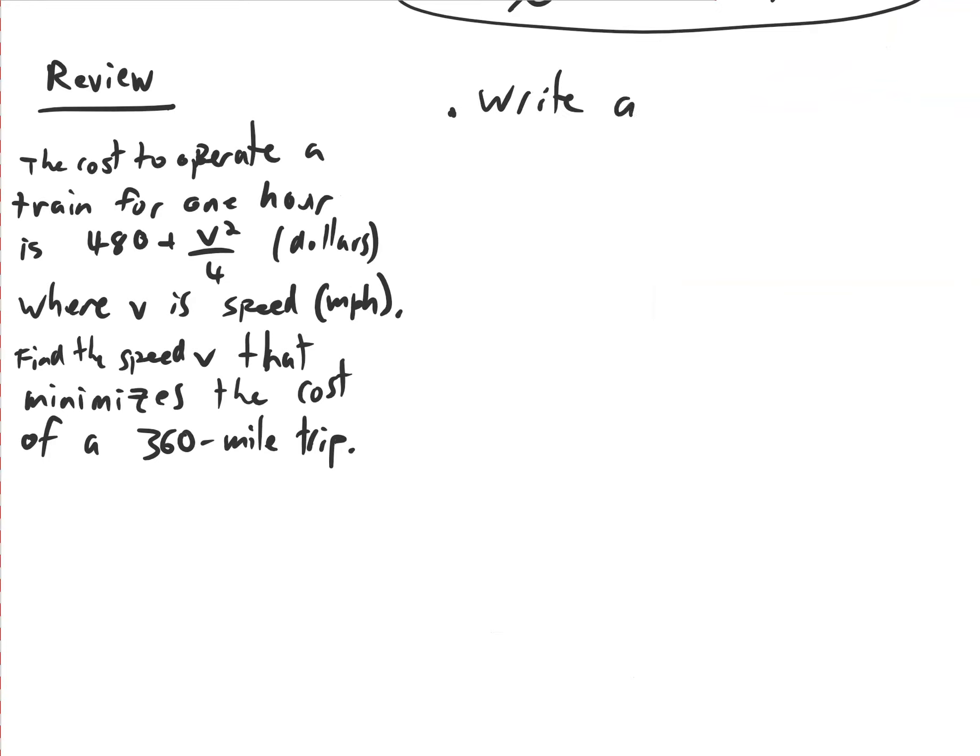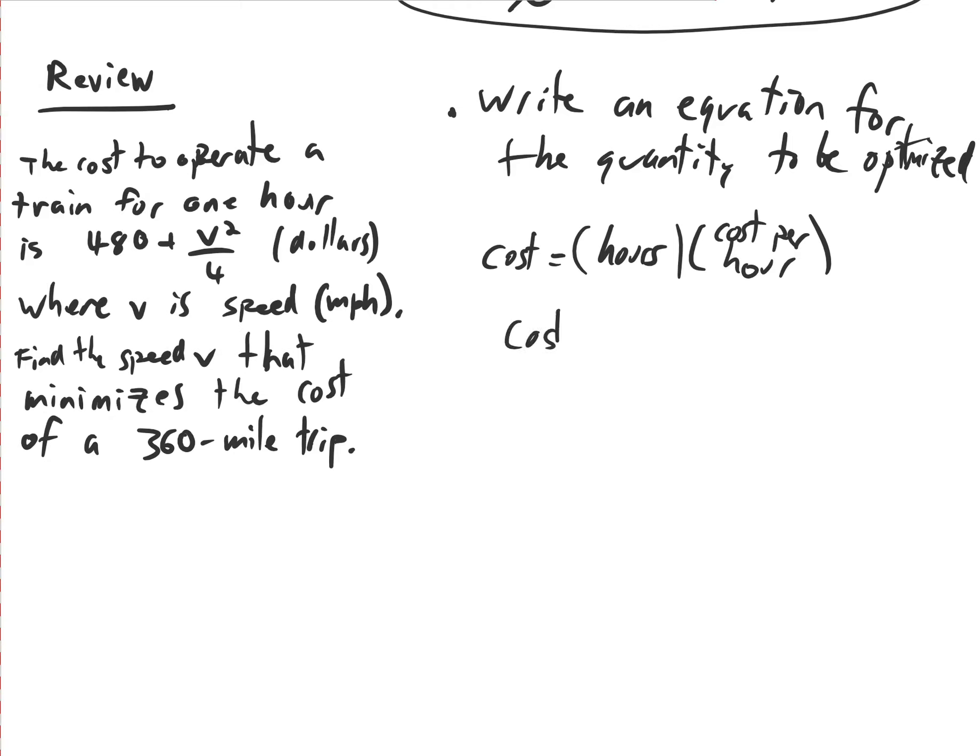The first thing we had to do was to write an equation for the quantity to be optimized. Sometimes you're trying to make something as small as possible, like cost. Sometimes you're trying to make something as big as possible. But here we're trying to optimize cost. So I start simple. Just basic, just write down the idea of the thing. So the cost to run something for number of hours is the number of hours times the cost per hour. We decided to let T represent time and hours. So the cost is T times. And we have this formula for the cost to run it for one hour. 480 plus V squared over 4. But this doesn't work because it has two variables.